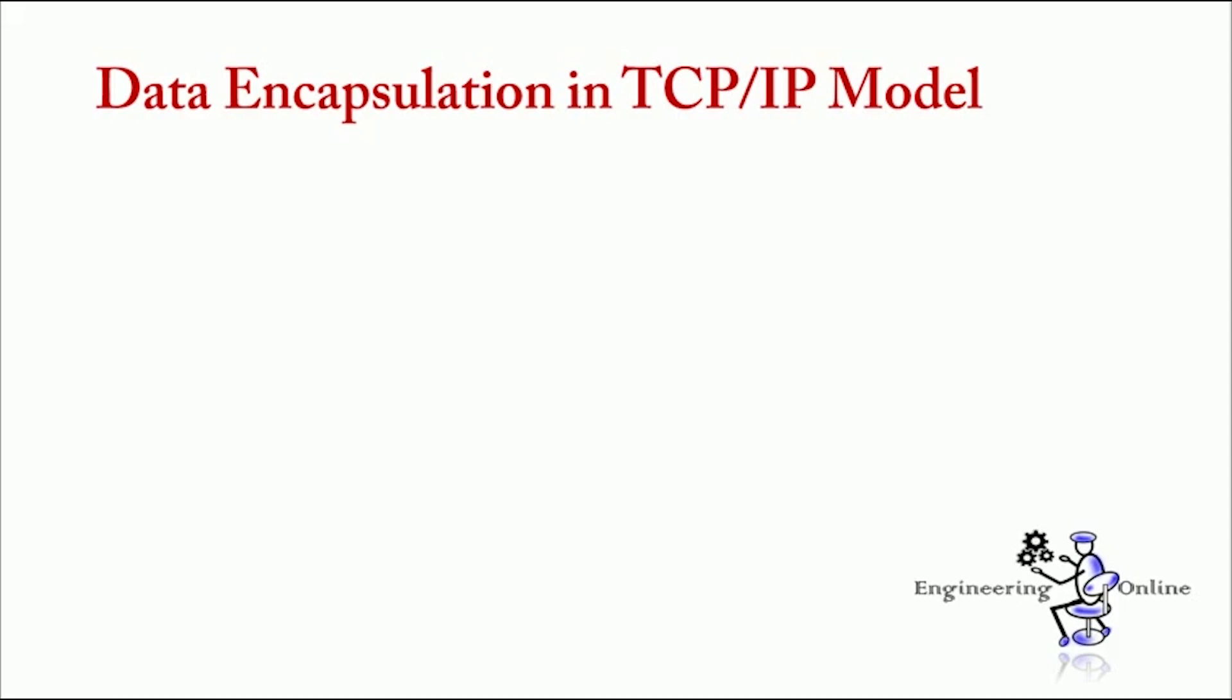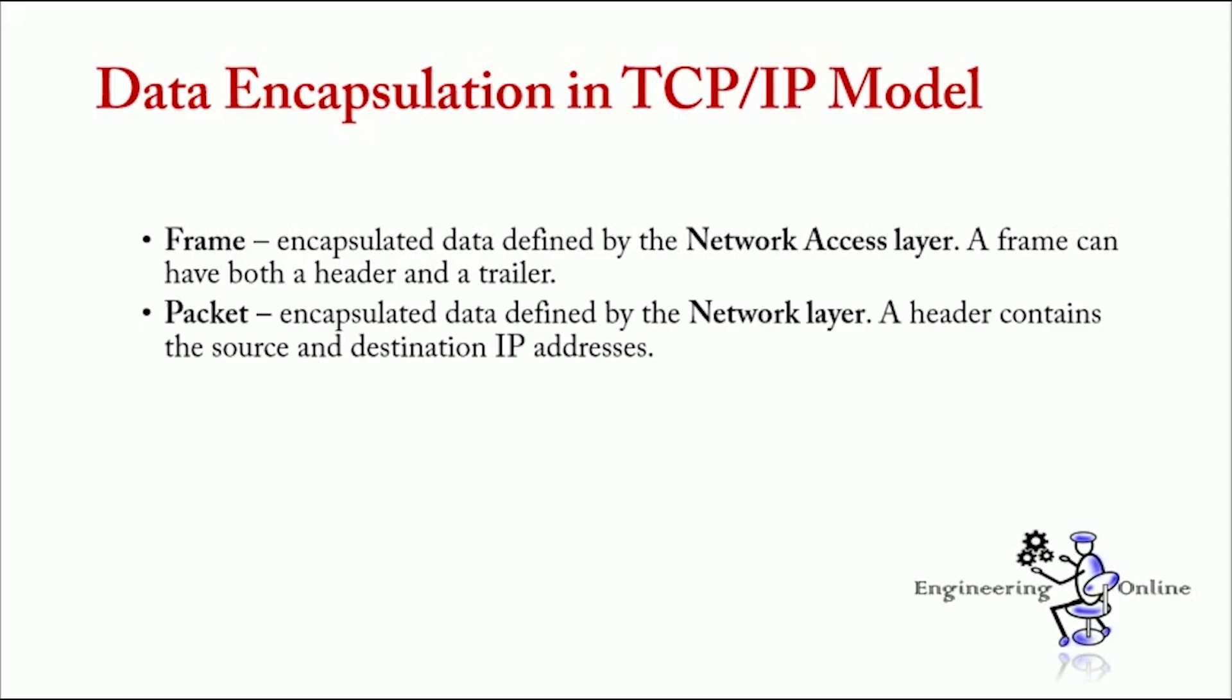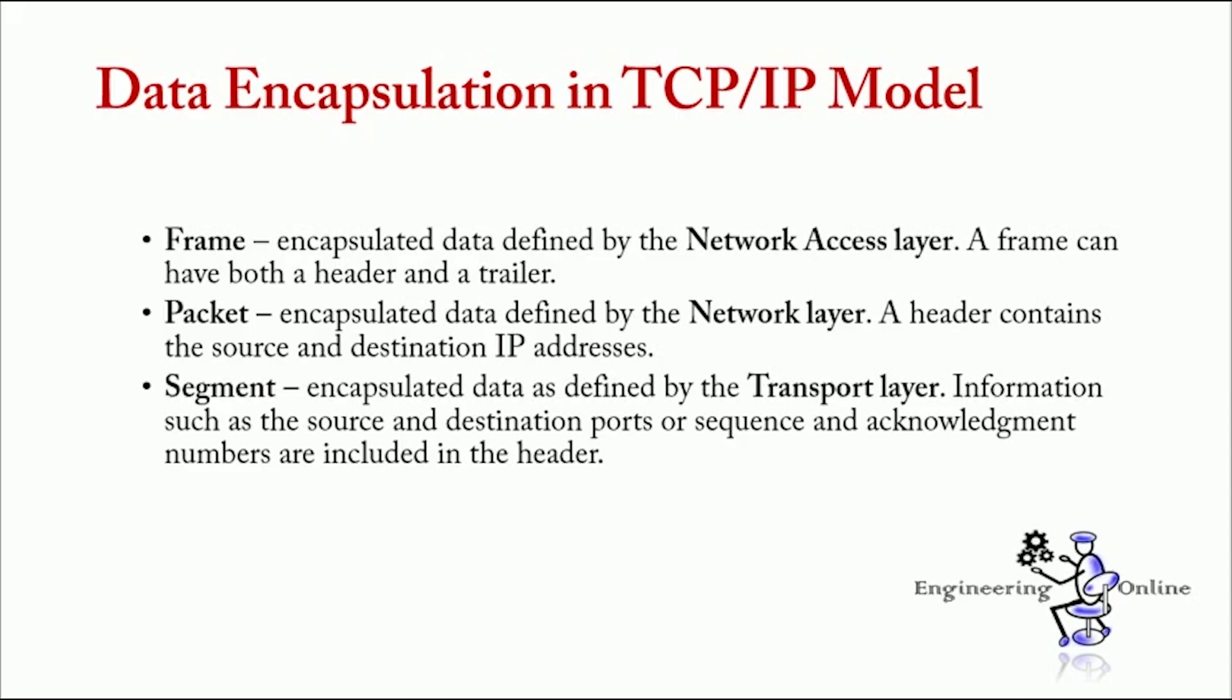There is a specific name for every packet in every layer. First, we have frame. Frame is mainly defined by the network access layer, and a frame can have both a header and a trailer. Next, we have packet. Packet is defined by the network layer. And a header contains the source and destination IP address. Then we have segment. Segment is defined by the transport layer. Information such as the source and destination ports or sequence and acknowledgement numbers are included in this header.